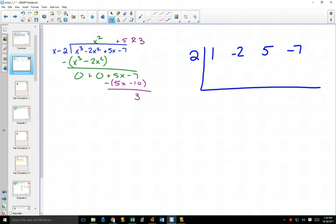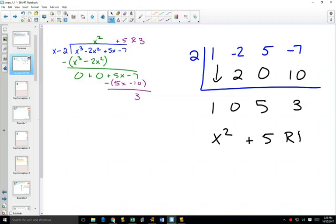Okay. And this is how you do it. You bring down the 1, multiply, add, multiply, add, multiply, add, and you get X squared plus 5 remainder 3. I love this. It's beautiful.